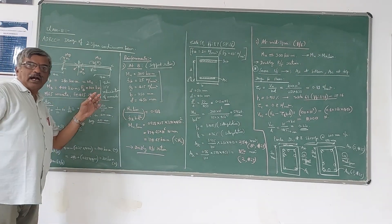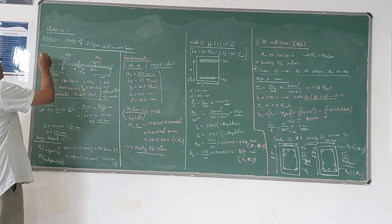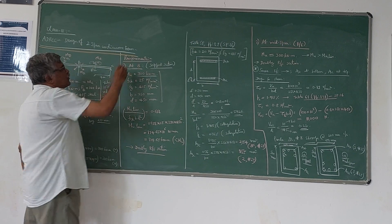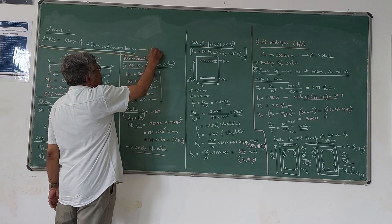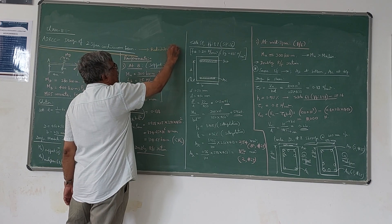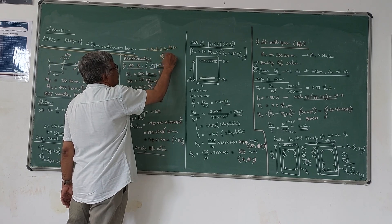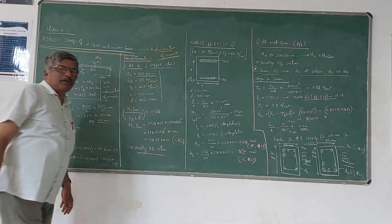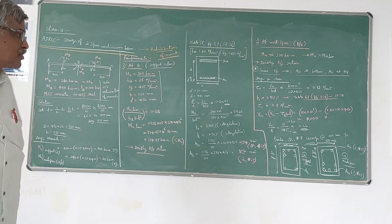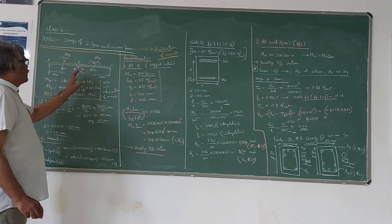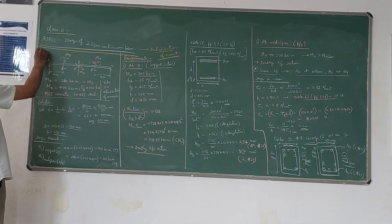In this class, I will explain how to design a two-span continuous beam using the concept of redistribution of moments. In the last lecture, I explained about redistribution of moments. So here, let us take the example of a two-span continuous beam to illustrate that concept. Let me take a problem of a two-span continuous beam like this.